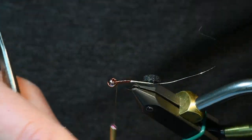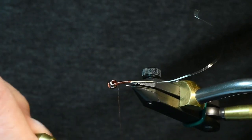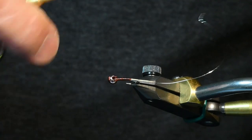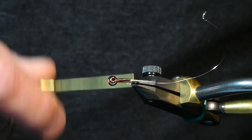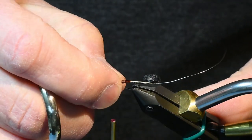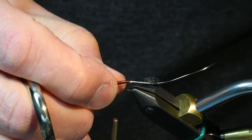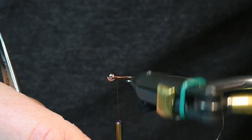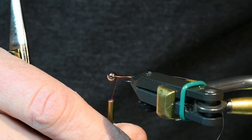I'm just trying to create a taper from the tail to the head of the fly, and you can do that with several passes of your body quilt material. Make sure that the slotted bead head is in the right position so it's not covering and it's going all the way to the eye on this jig hook.